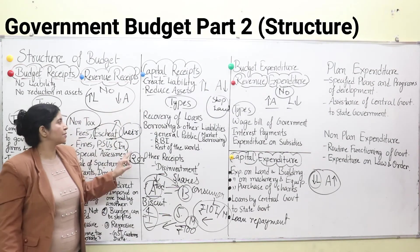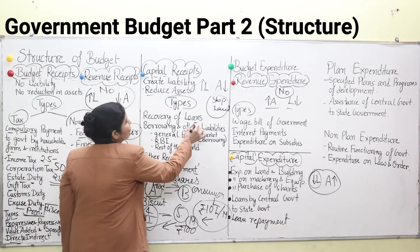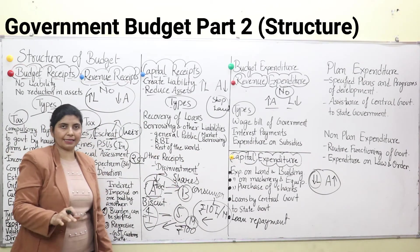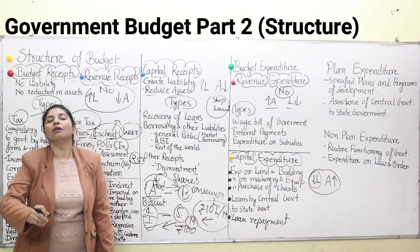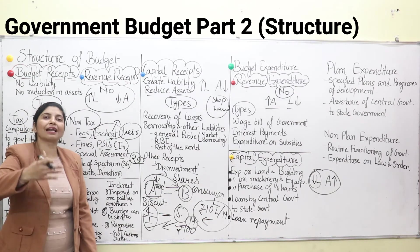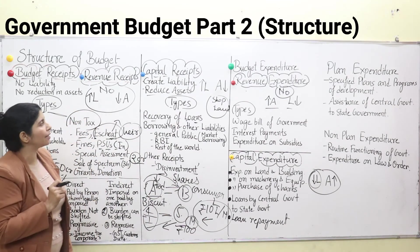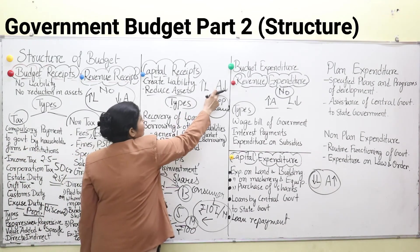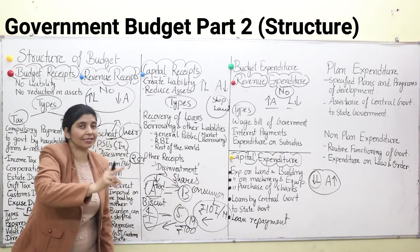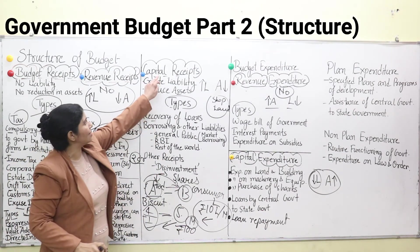Types of capital receipts. Number one: recovery of loans — receipts that come from loans which have been given to state governments by the central government. In certain cases the central government gives loans to state governments for their assistance, and when those loans are repaid by the state government, this is known as recovery of loans. In this case, assets of the central government are decreasing because the loan has been repaid — so it is a capital receipt.